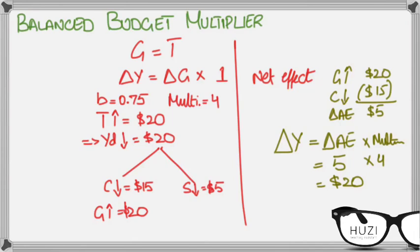Hence, change in Y is equals to change in government expenditure which is equals to change in government expenditure and net taxes.